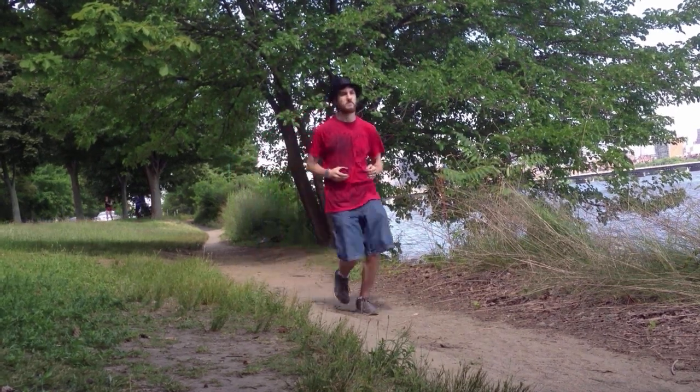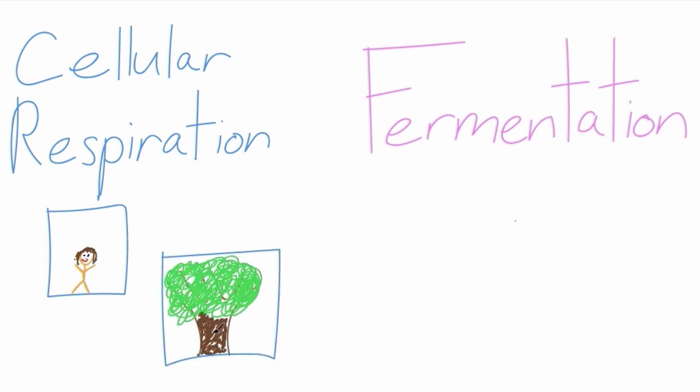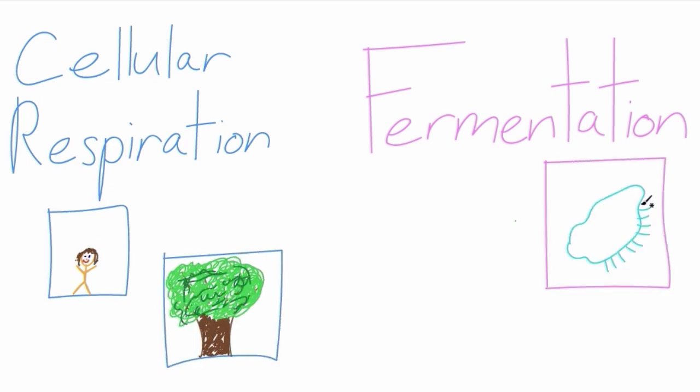Today we will learn about two processes that the cells in your body use to make energy. The first is cellular respiration, and the second is fermentation. By the end of this video, you will be able to tell these processes apart and even predict which processes occur based on a given organism's environment.